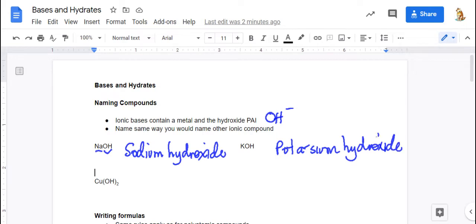Cu(OH)₂. So copper is a multivalent metal. So you have to figure out the charge on the copper. So you can do the reverse crisscross. So that becomes a two and that becomes a one. Double check. Is the hydroxide one negative? Yes, it is.